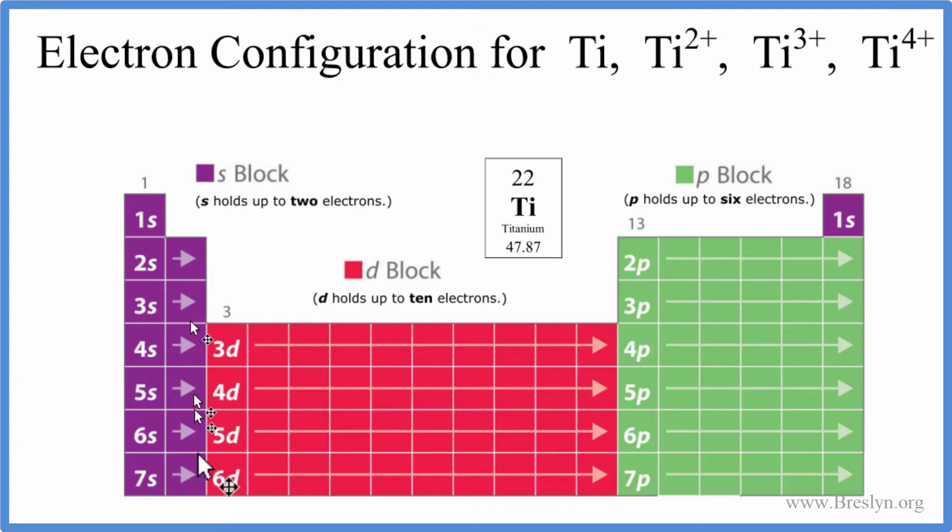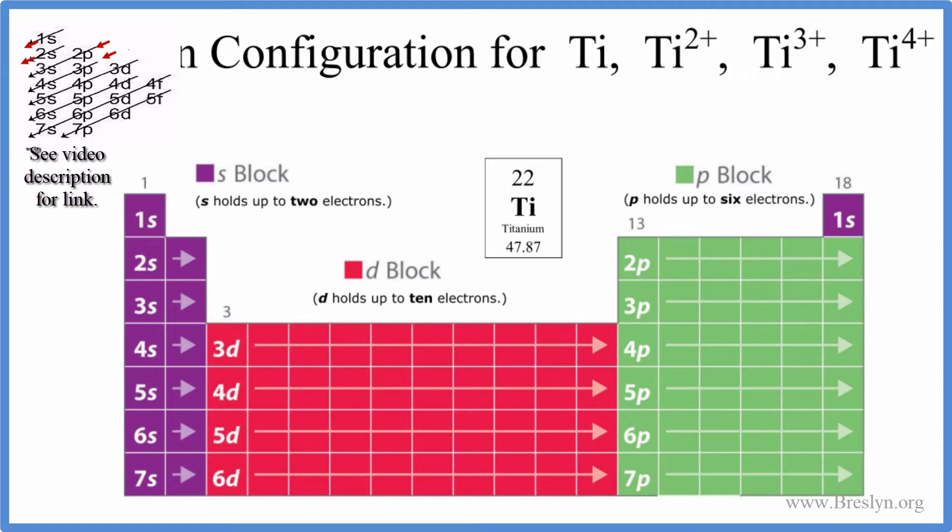We'll use this periodic table here broken up into these orbital blocks. You can also use this chart up here. There's a link in the description that explains how to do that. This is a better way to do it, though. So let's do it this way.